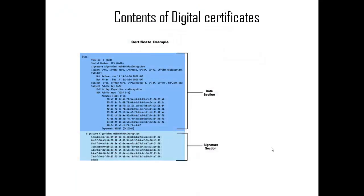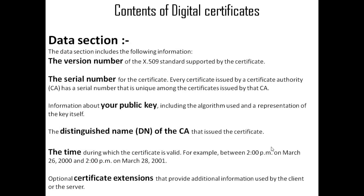Digital certificates are divided into two sections: the data section and the digital signature section. The data section contains the version number based on the supported standard, a serial number unique among certificate authorities, public key information including the algorithm used and key representation, distinguished names of CAs as certificate issuers, the validity time duration, and optional certificate extensions containing additional information.